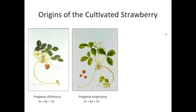Just as a brief background on this octoploid: cultivated strawberry is a hybrid between two octoploid wild progenitors, Fragaria chiloensis and Fragaria virginiana. Fragaria chiloensis clones and accessions were collected from Chile in South America and accidentally hybridized in European botanical gardens with Fragaria virginiana, which had been collected from the east coast of North America, and generated what we enjoy today as Fragaria ×ananassa, the cultivated strawberry.